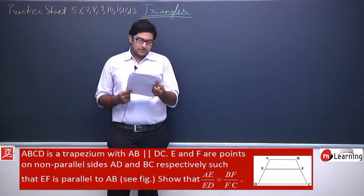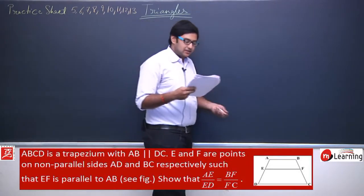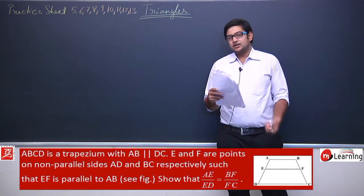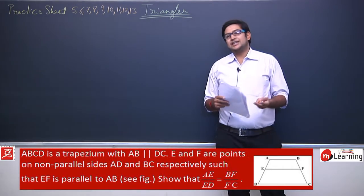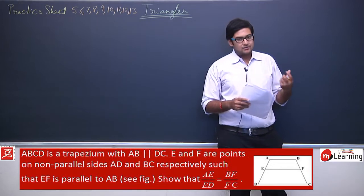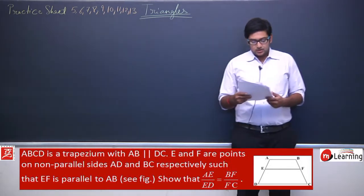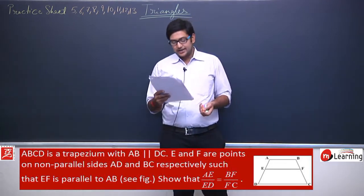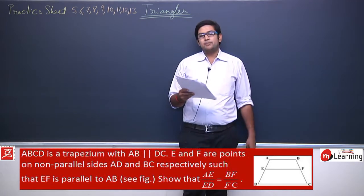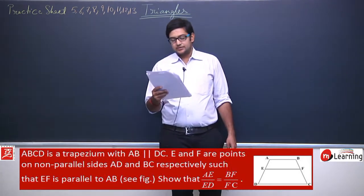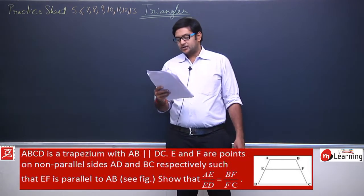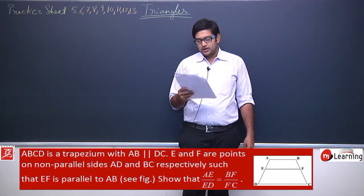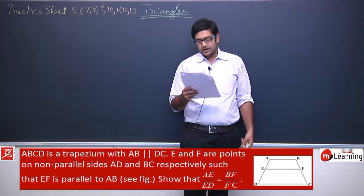Question number 5 says: ABCD is a trapezium with AB parallel to DC. A trapezium is a quadrilateral in which one pair of sides is parallel and one pair is non-parallel. E and F are points on non-parallel sides AD and BC respectively, such that EF is parallel to AB. Show that AE upon ED equals BF upon FC.